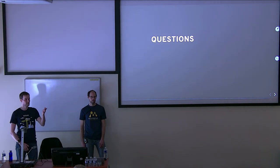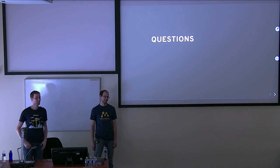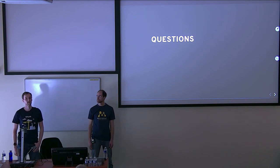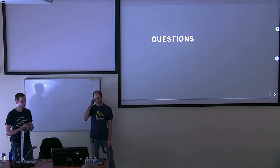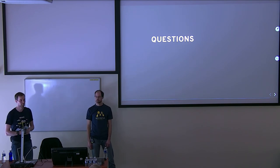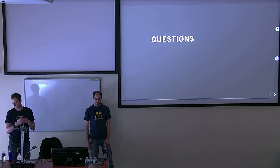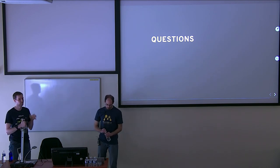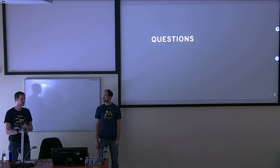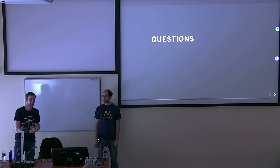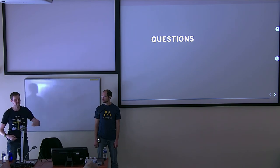Q&A: How does Dimeflow handle the case where the second execution plan — the one undoing changes — itself fails? It's up to the developer writing the action code. Because it's another execution plan, you can apply the same set of strategies: pause it for someone to handle, fail it, or even have a revert for that. You can go down that rabbit hole and have reverts for reverts if you want.